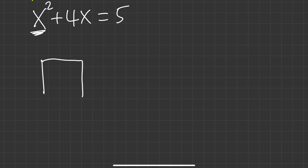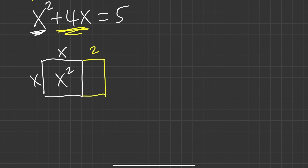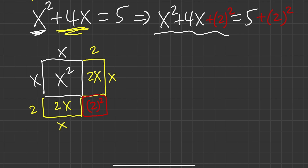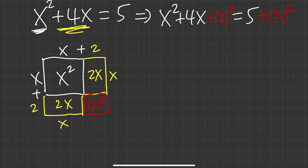For x squared, we draw a square with side x. For 4x, divide 4 by 2 to get 2, placing a 2-by-x rectangle on each side — giving 2x plus 2x equals 4x. The missing corner has sides 2 by 2, so its area is 2 squared, which is 4. Adding 2 squared to both sides: x plus 2 squared equals 4 plus 5 equals 9.